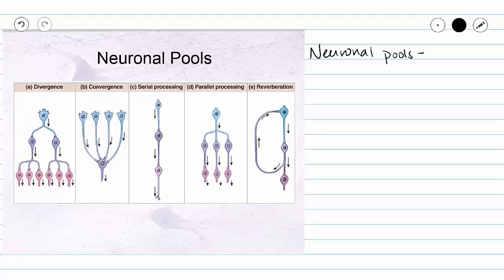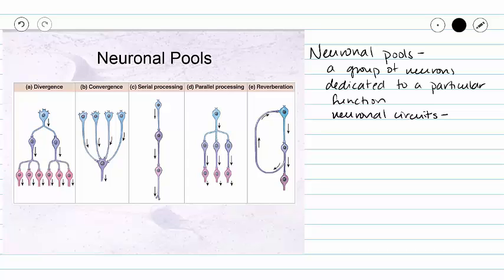A neuronal pool is a group of neurons dedicated to a particular function. Neuronal pools are made of a series of neuronal circuits. The circuit describes the structural orientation of the neurons in that neuronal pool.